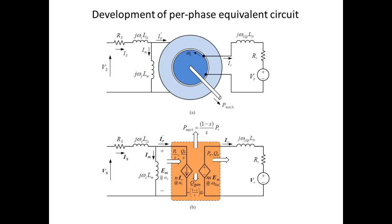Now we can put together the things that we learned about the similarities and the differences between the transformer and the induction machines — in particular the DFIG — to look at the voltage-current transformations and the active and reactive power on the stator side and the rotor sides.